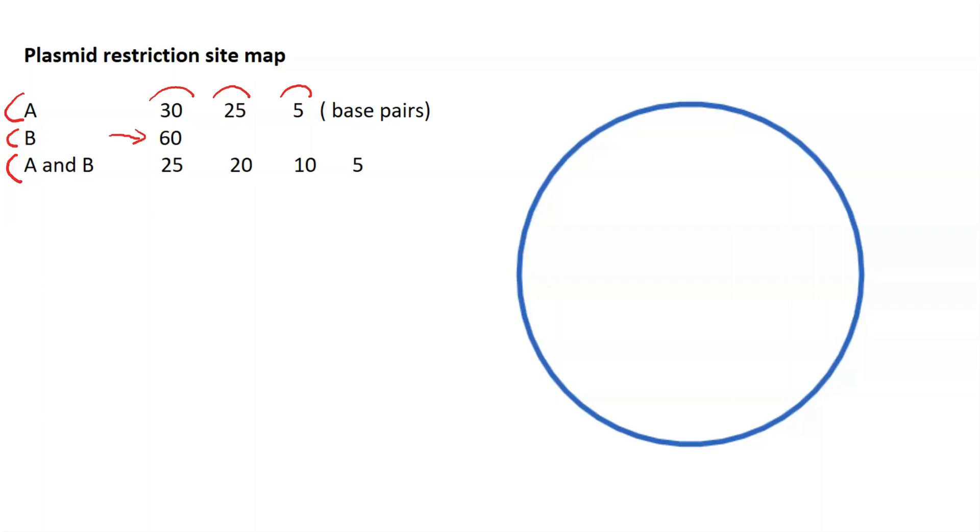First, you want to establish how big this plasmid is. If you look at all of these fragments individually in each tube and add them up, you'll see that they add up to 60. So that's how big this plasmid is. We get 60 here, and then nothing to add here because we only have one cut. Our plasmid is 60 base pairs.